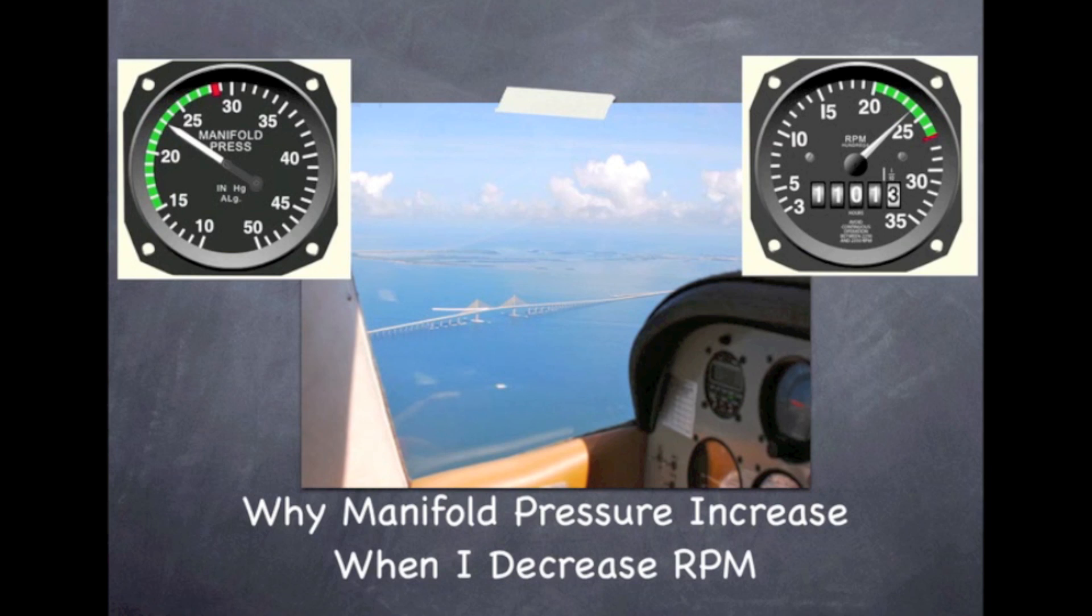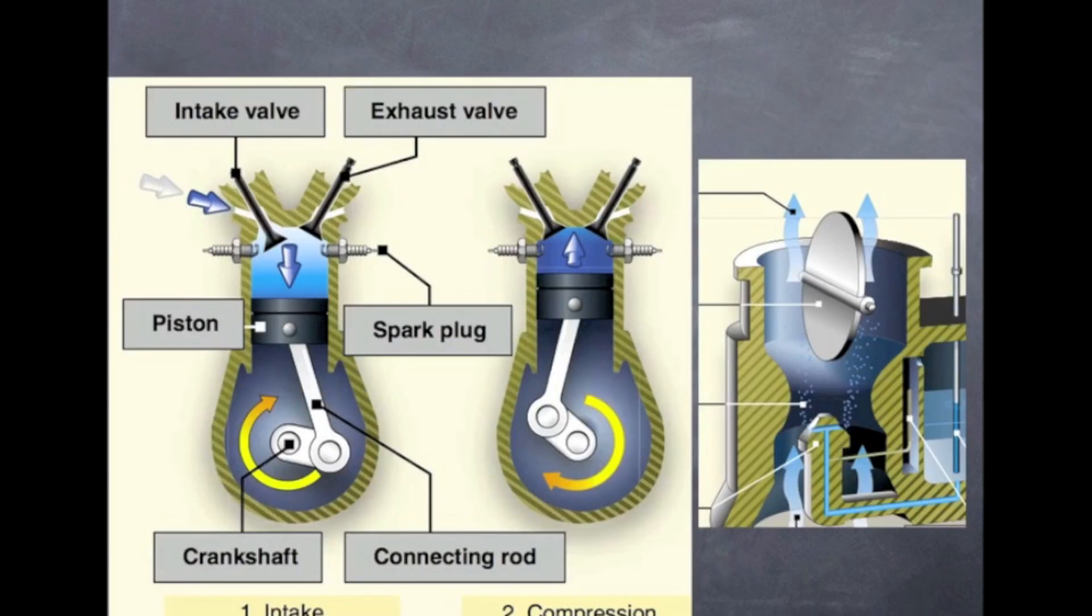So why do we have an increase in manifold pressure when we decrease the RPM? Now let's go back and review the manifold pressure and what the manifold pressure is reading. Again, looking at our cylinders and looking at our carburetor and our intake, let's take a look at how we're reading that manifold pressure. The manifold pressure is measured. It is the absolute pressure in the intake manifold.